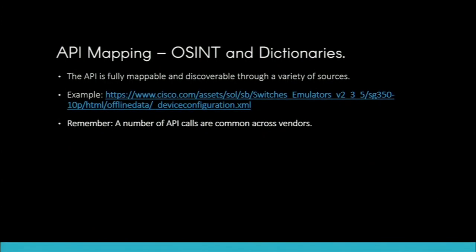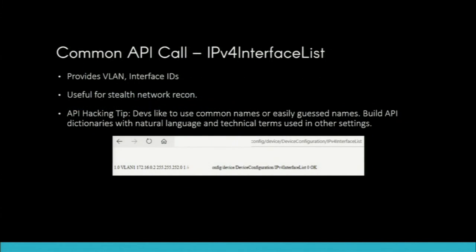I started getting curious about what API calls work across multiple vendors. One is the IPv4 interface list, which provides VLAN information, interface IDs, and other details in XML format — and you can do this from a web browser with no tools. Another API hacking tip: developers like to use common names for things, natural words, or things they've seen in other products. So I build my API dictionaries using natural language, English language, and things I've found before.